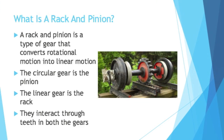What is a rack and pinion? A rack and pinion is a type of gear that converts rotational motion into linear motion. The circular gear is known as the pinion, and the linear gear is known as the rack.